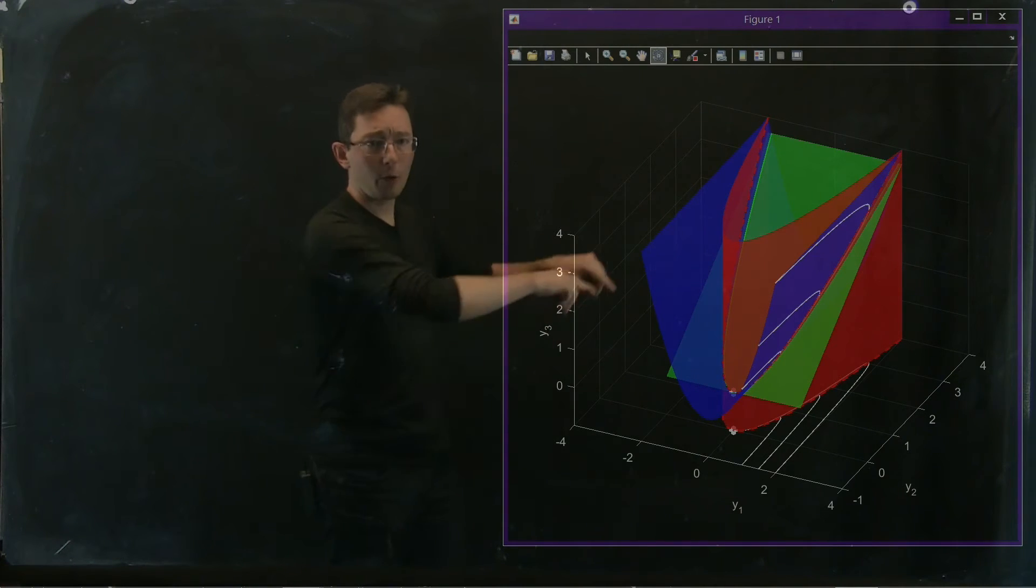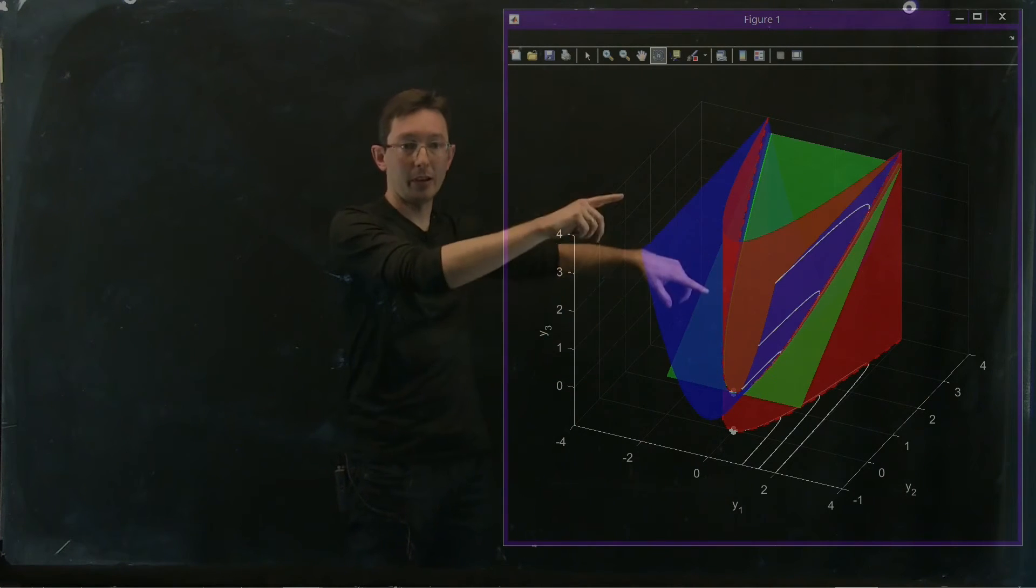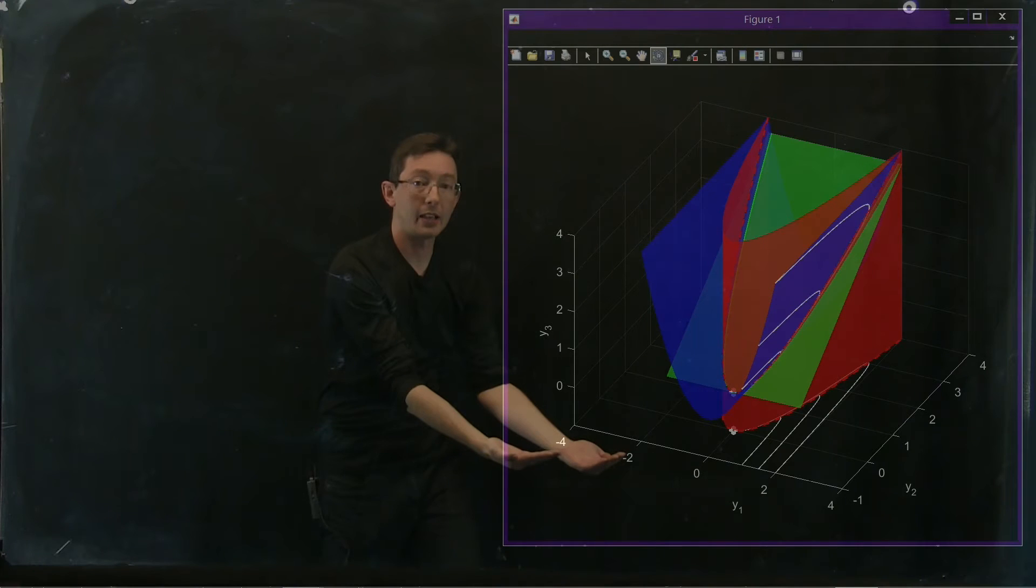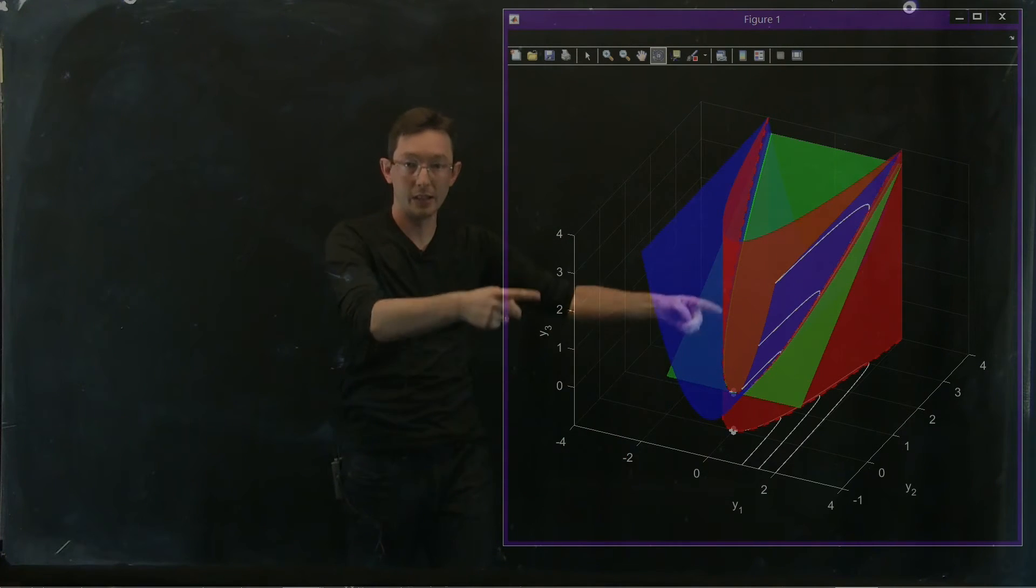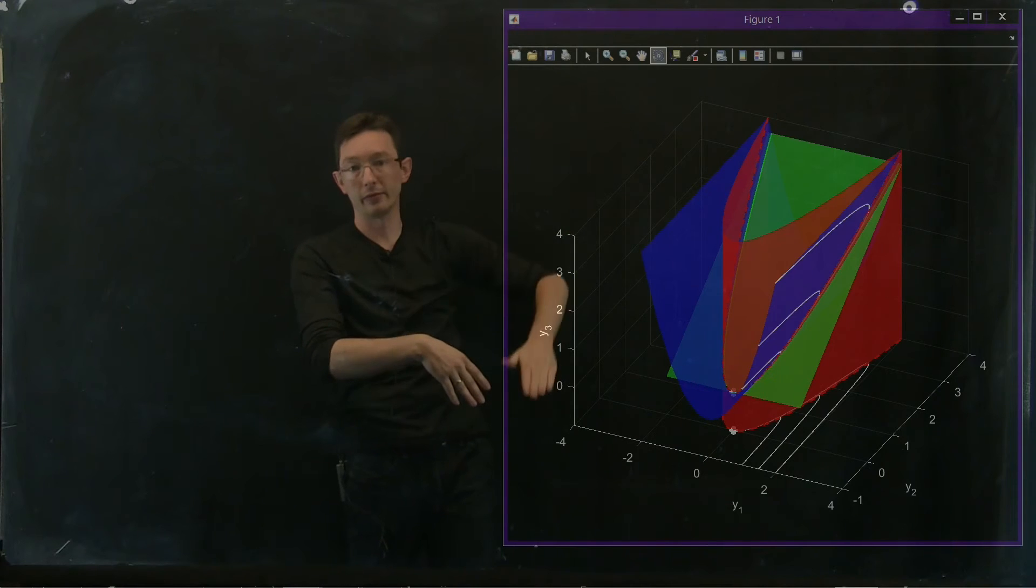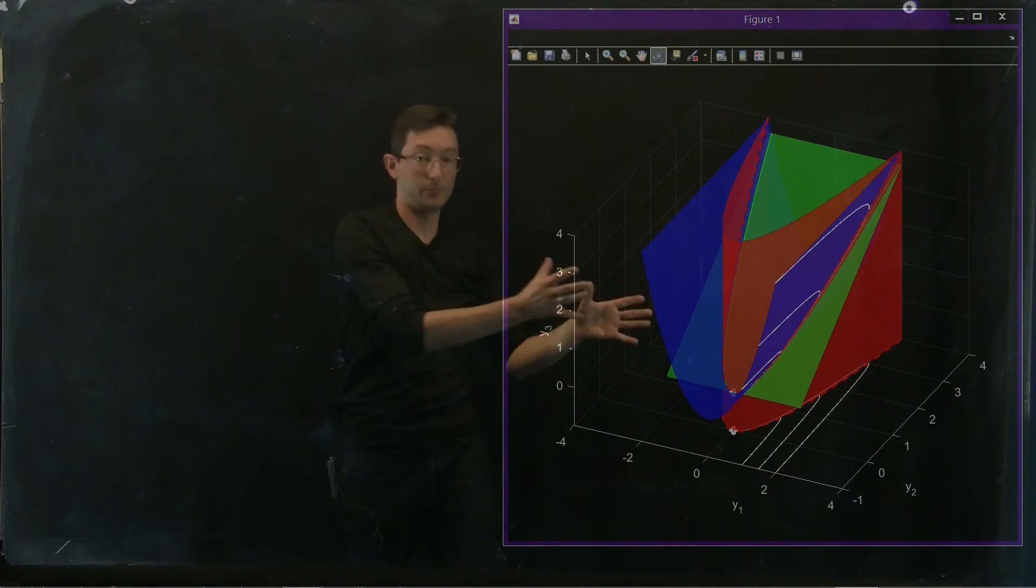So our slow manifold, that red dashed parabola, if you take that out of the x1, x2 plane and you move it through y3, because that should also be a slow manifold regardless of y3, you get this red parabolic sheet.